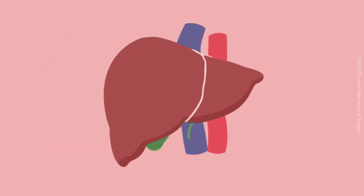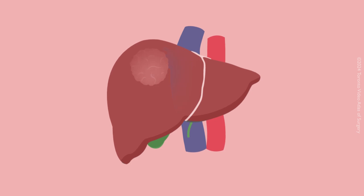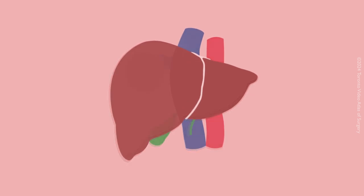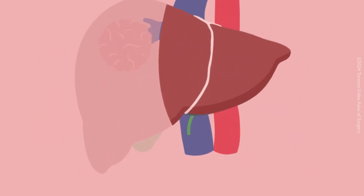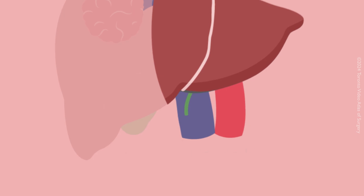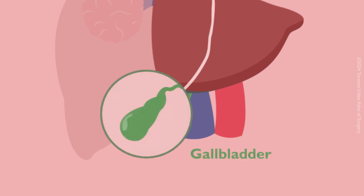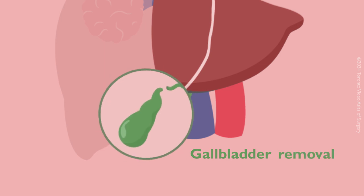Several health problems like cancer can be treated with liver resection surgeries. In a liver resection, the diseased part of your liver is removed. Depending on the location and size of the tumor, a significant portion of the liver can be removed as long as the remaining part is sufficient and relatively healthy. Most liver resections also involve removing your gallbladder because it is located in the middle of your liver and is often attached to the piece of liver that needs to be removed.